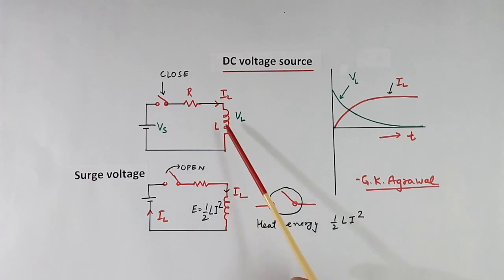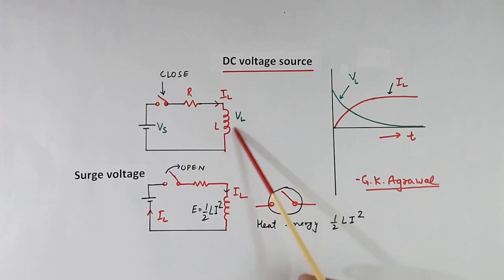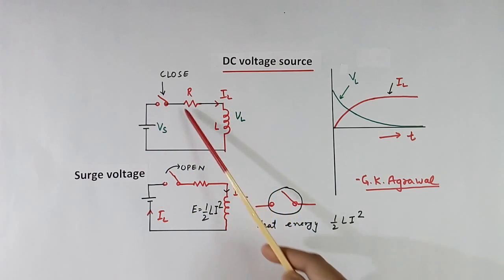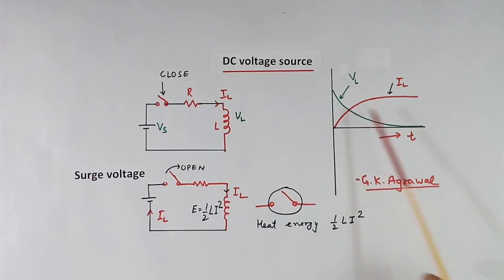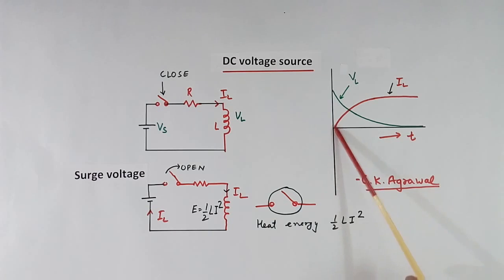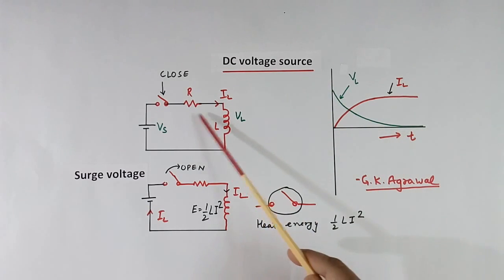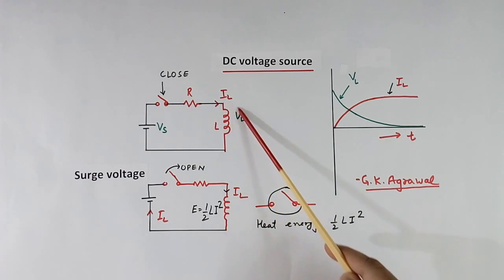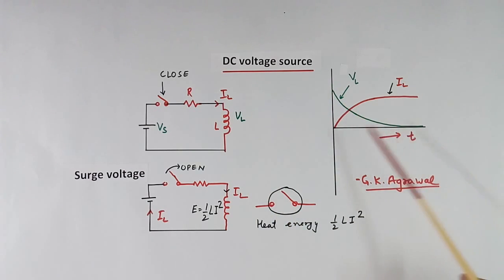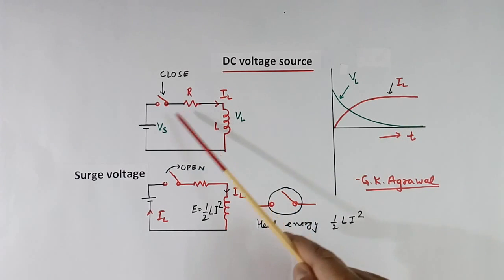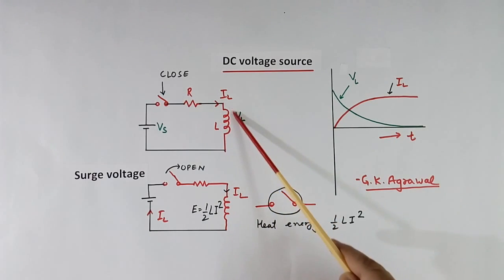When we close the switch, in the beginning the inductor behaves like an open circuit. When the switch is closed, full voltage will appear across it and no current will flow. At T equals 0, this full voltage Vs appears and current is zero. Then slowly current will start increasing. When current increases, there will be a voltage drop across the resistor, so voltage across the inductor will reduce. After some time, current will stabilize and this maximum current will be equal to Vs divided by R.